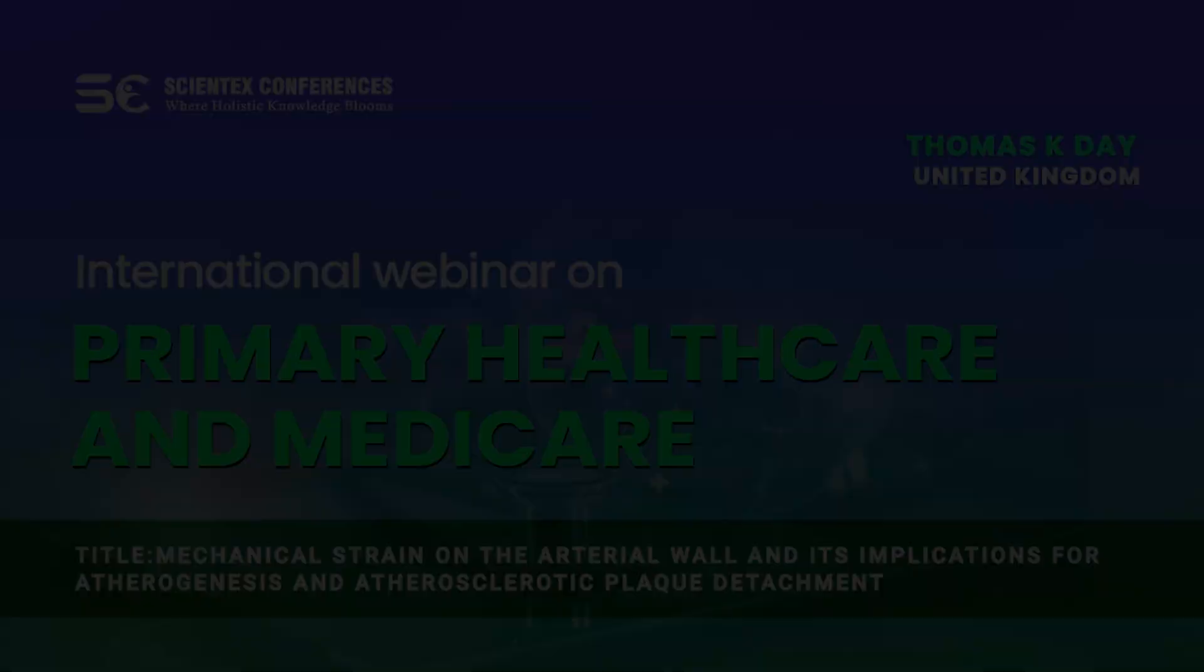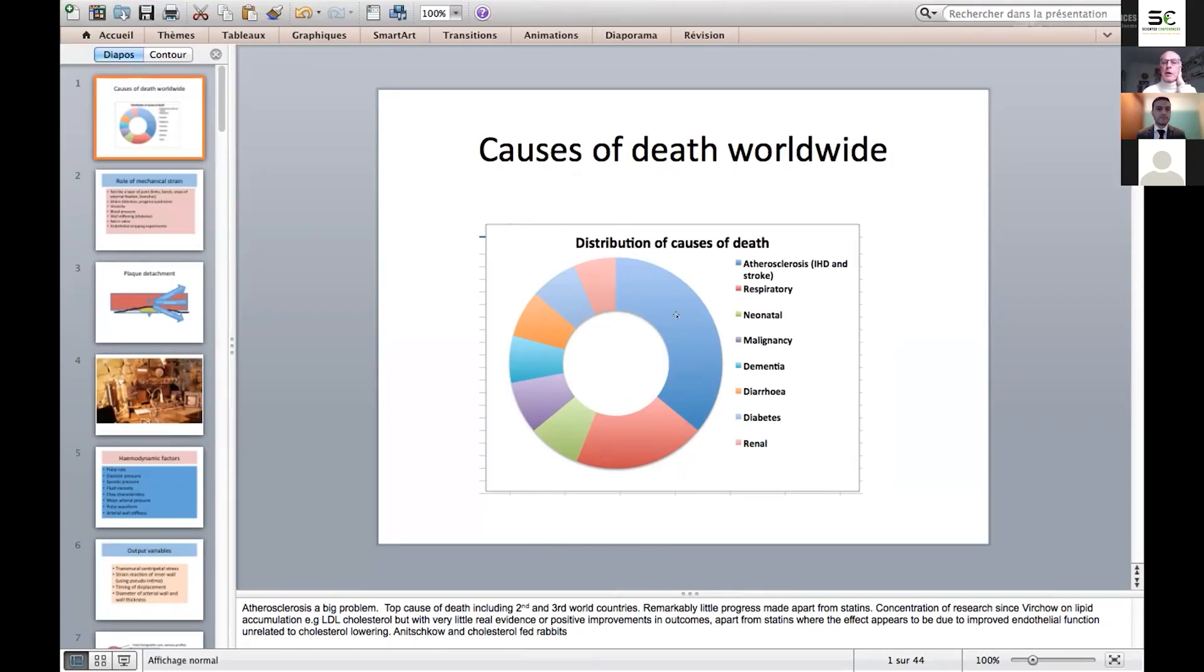So this blue circle here represents how many people are dying from the effects of atherosclerosis, basically coronary heart disease and stroke.